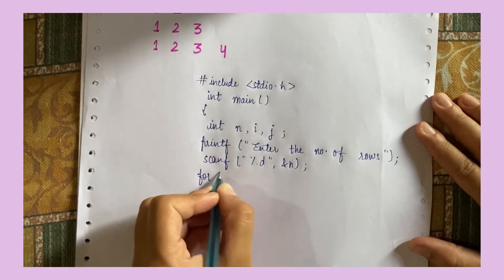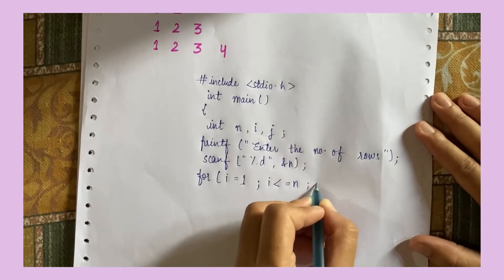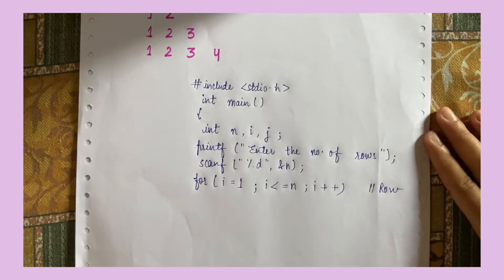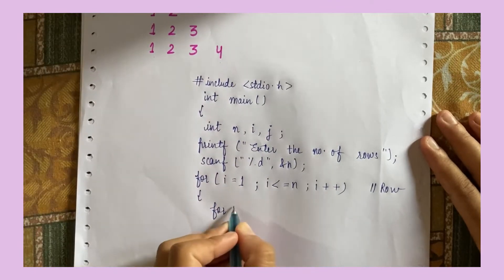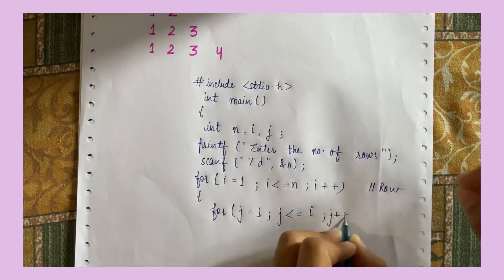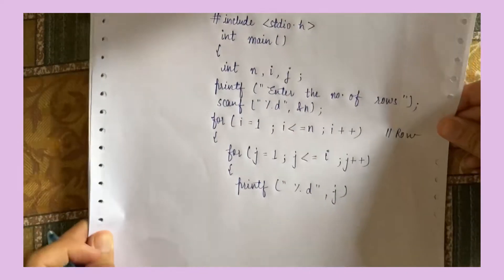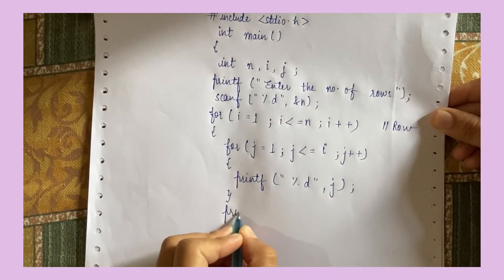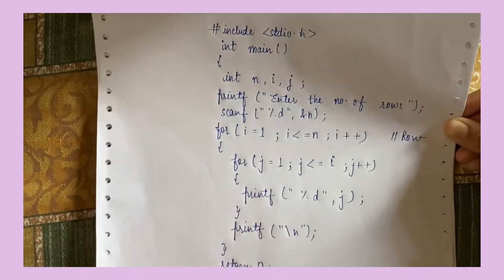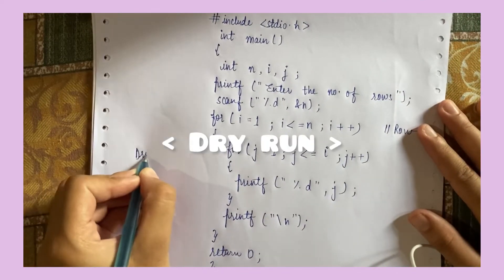Now we will use a for loop for I, starting from 1, for the number of rows. I is for the number of rows and it will be less than or equal to N — the number of rows that the user has input. This loop is for the number of rows we are going to print in the pattern. Now we need one more loop — J starting from 1, J will be less than or equal to I. And then we will print J. Then we will go to another line using backslash N, and then close with return 0. Now why did we use these two loops? What do they signify? We will discuss in the dry run.